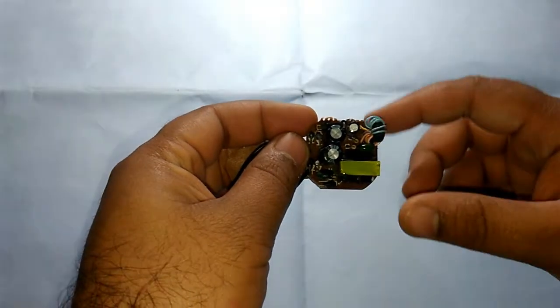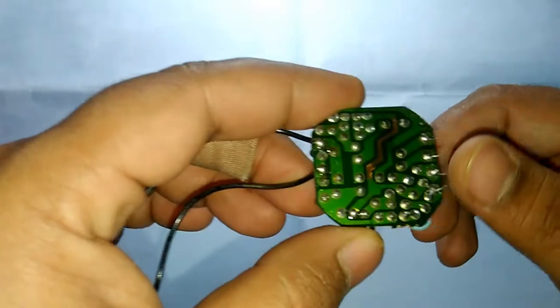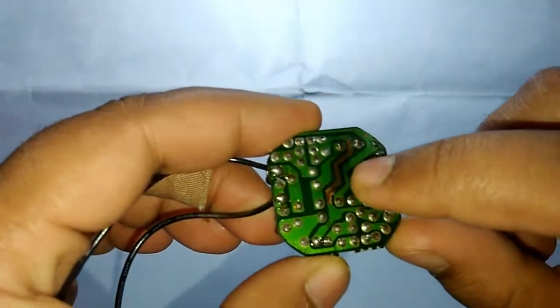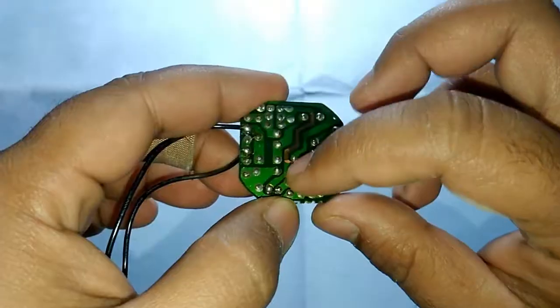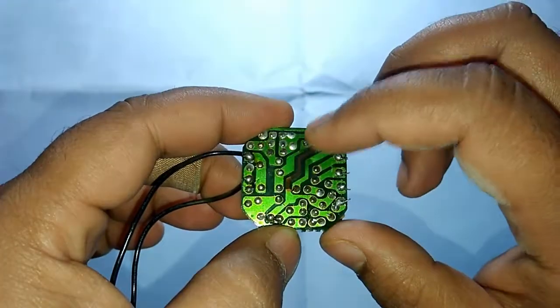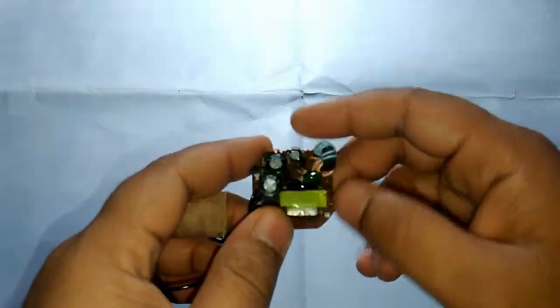I have this board right here. It is from an old LED light, and it is faulty because as you can see right here, the copper strip is gone and this PCB is not usable anymore. So let's take out all of its components and use them in another one.